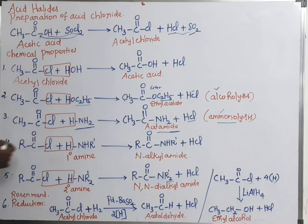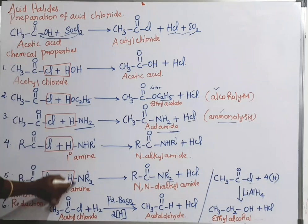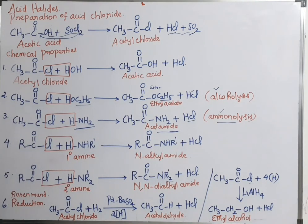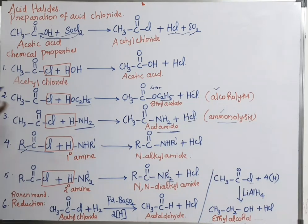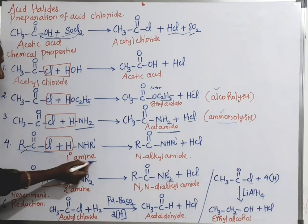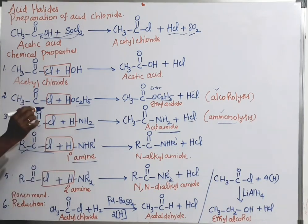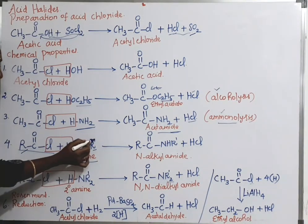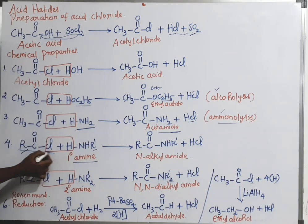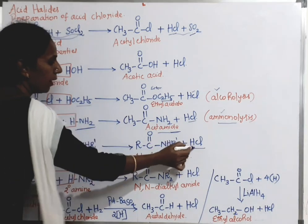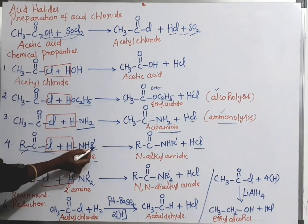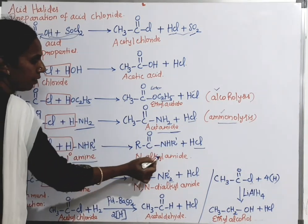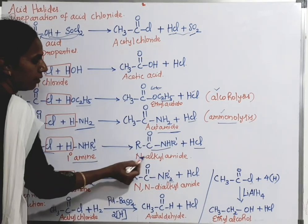The fourth reaction: acid halide (RCOCl, where R is the alkyl group) reacts with primary amine (R'NH2, which has only one alkyl group). Here also HCl is removed. The remaining part is RCONHR', which is called N-alkyl amide — CONH is the amide group.